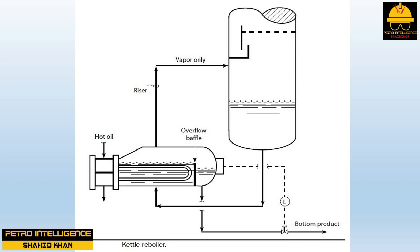Shell-side fouling causes a pressure drop build-up on the shell side of the reboiler, raising the tower bottom liquid level. However, this increased tower bottom liquid level will not be reflected in the indicated bottom level seen in the control room, which actually shows the level at the end of the kettle reboiler. This is a constant source of confusion to operators whose towers flood due to high liquid levels yet their indicated liquid level remains normal.